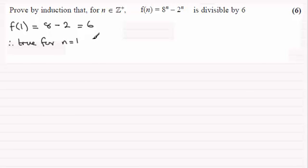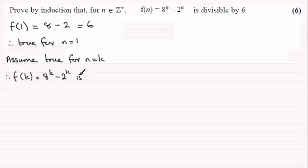Okay now we need to assume that it's true for some value of n, some integer value for n, and what we do is we say that it's true for n equals k. And if that's the case then we've got that therefore f(k) which would equal 8 to the power k minus 2 to the power k, that must be divisible by 6.